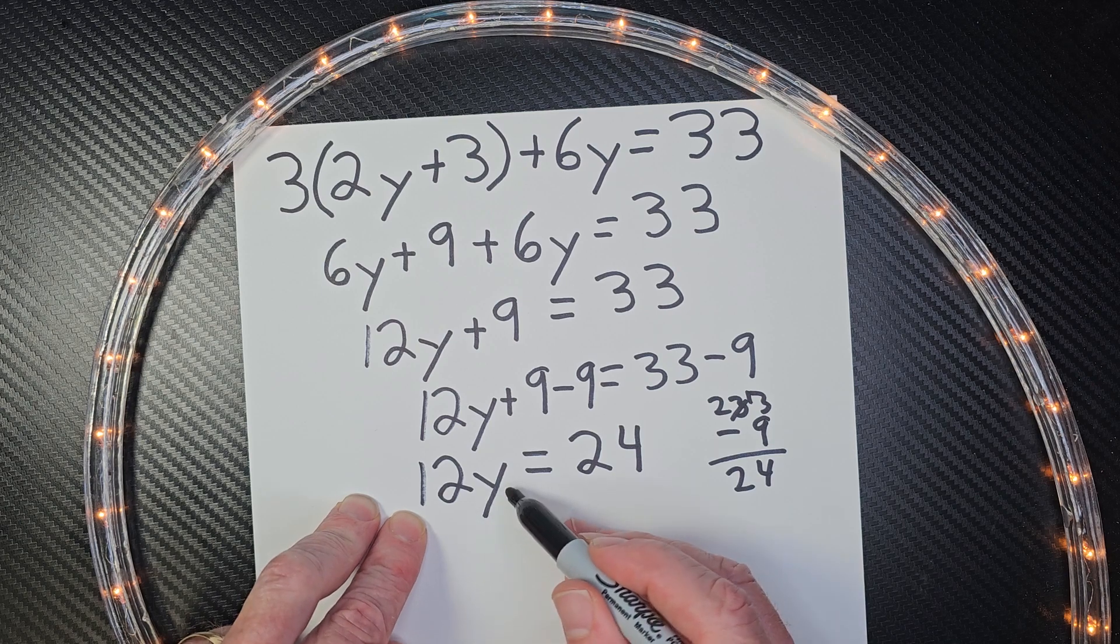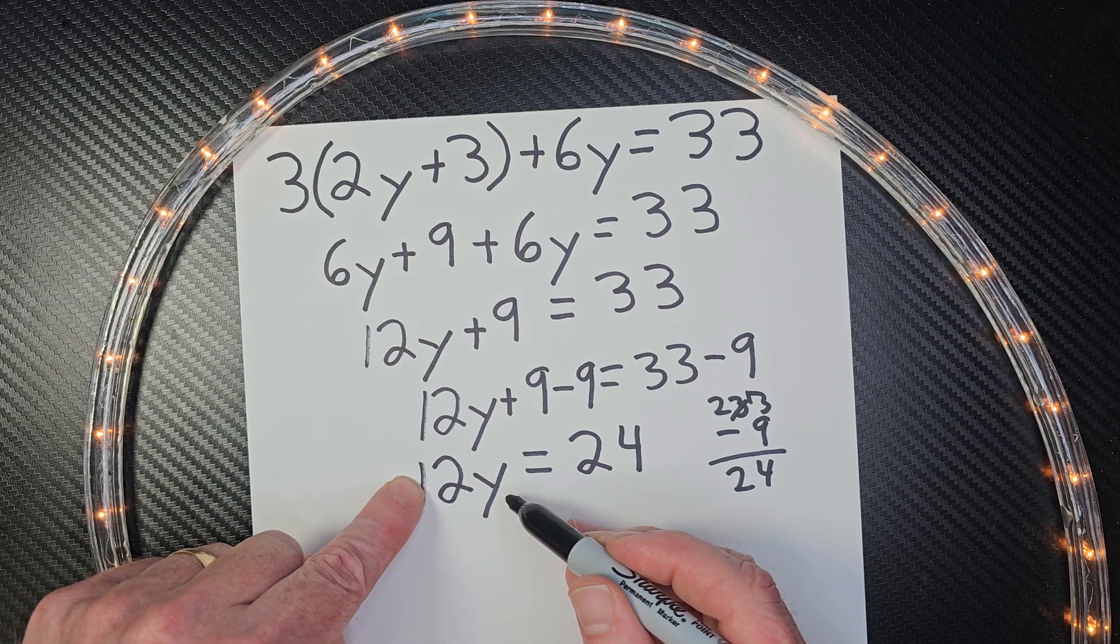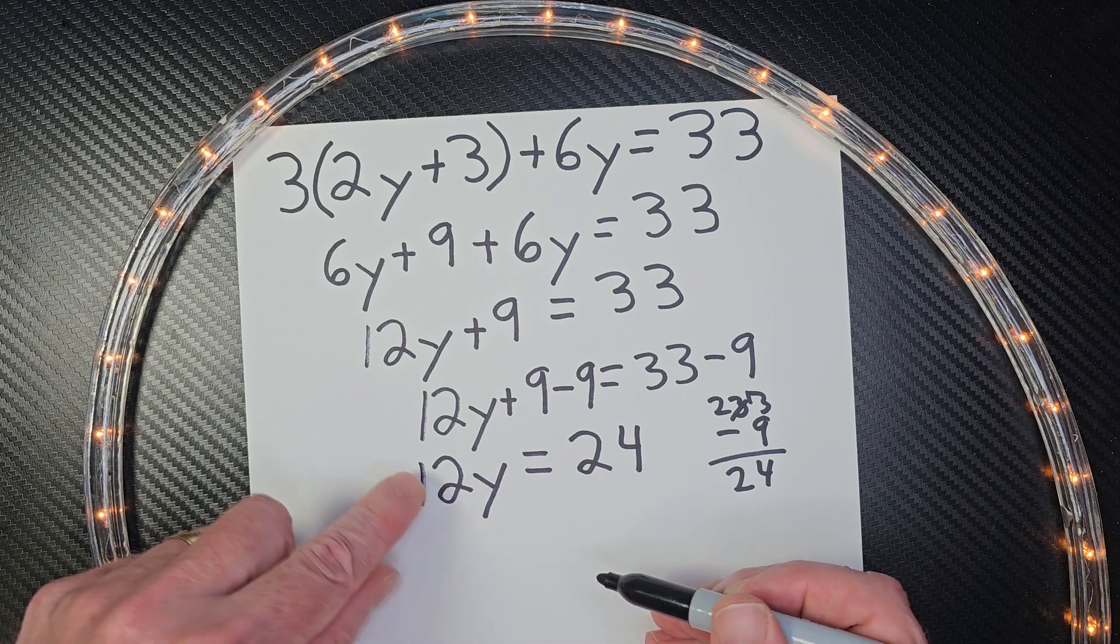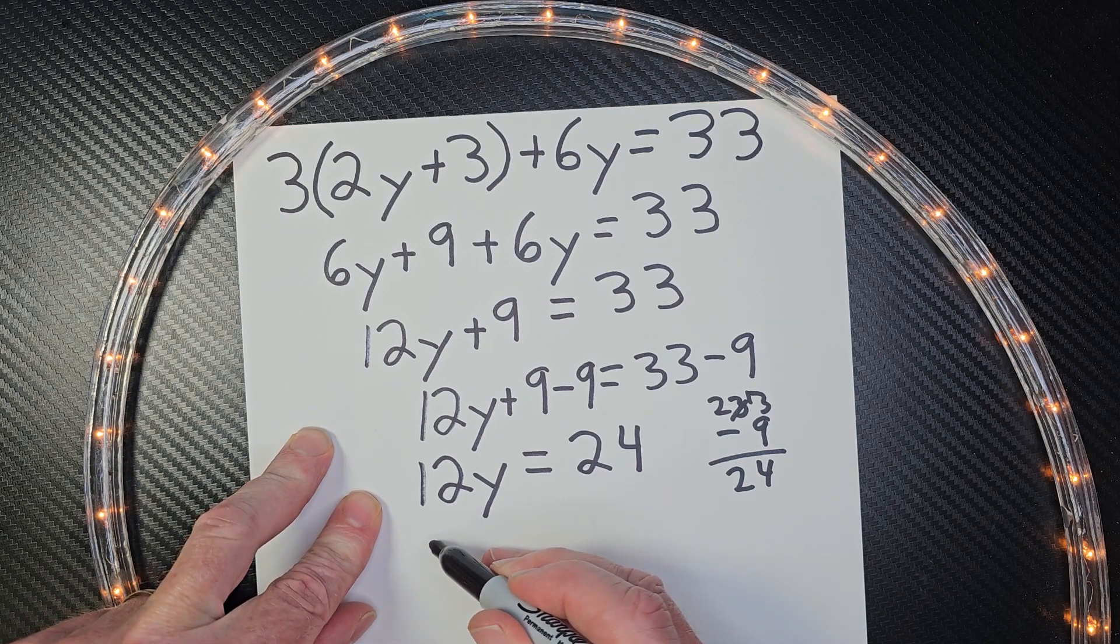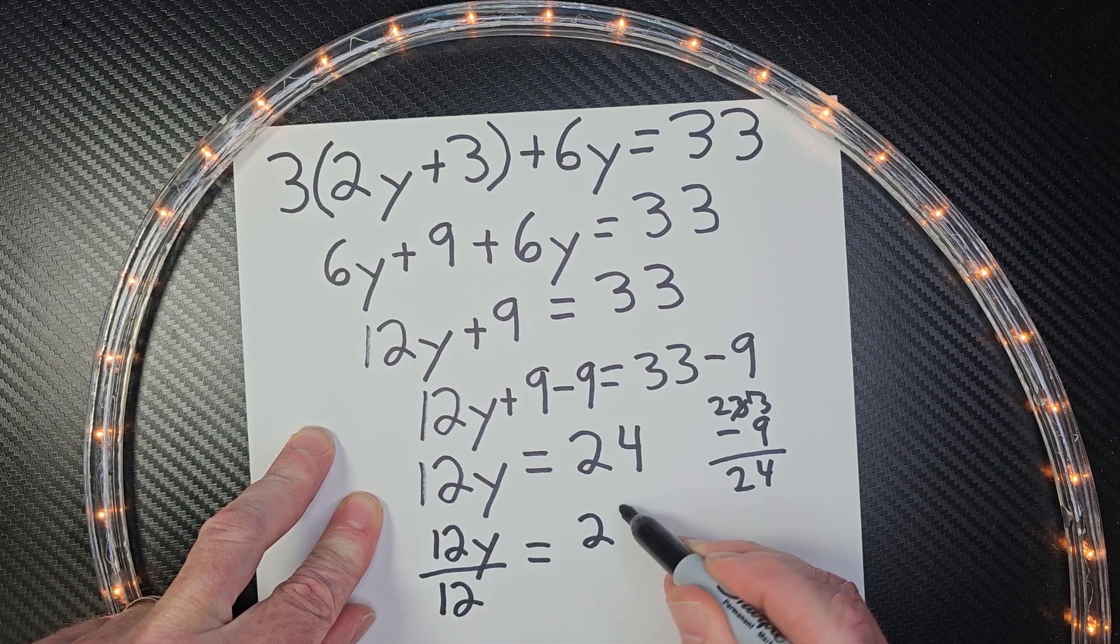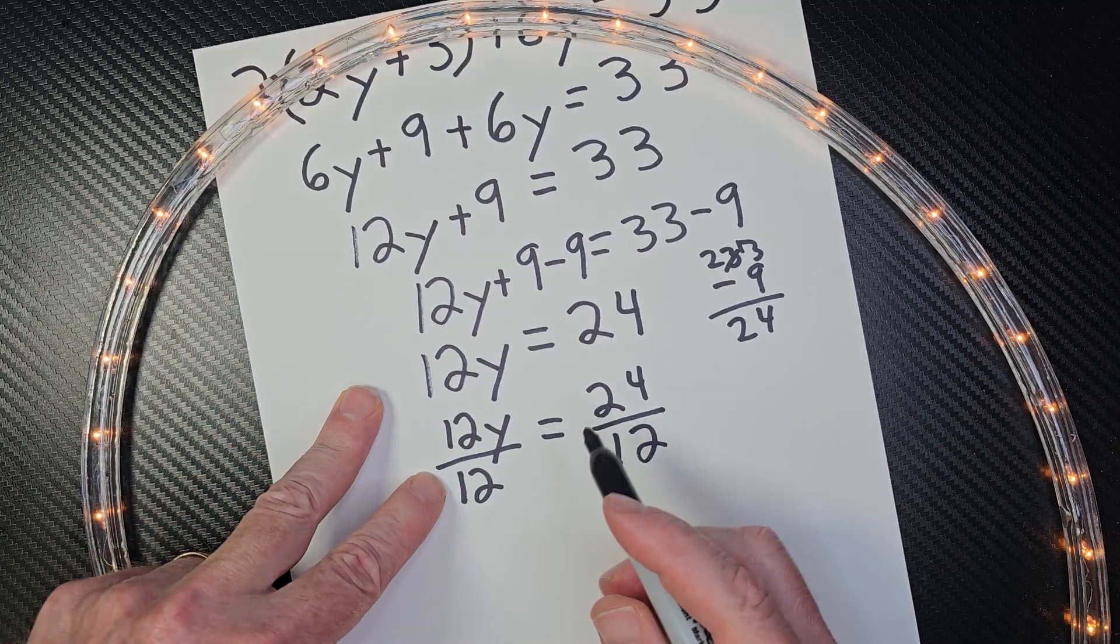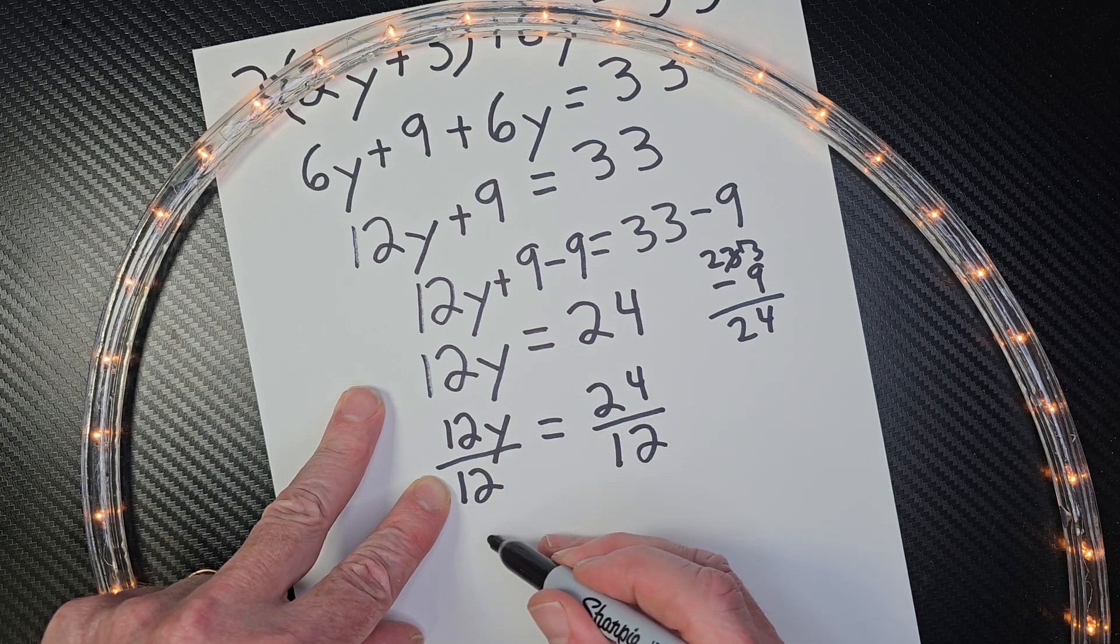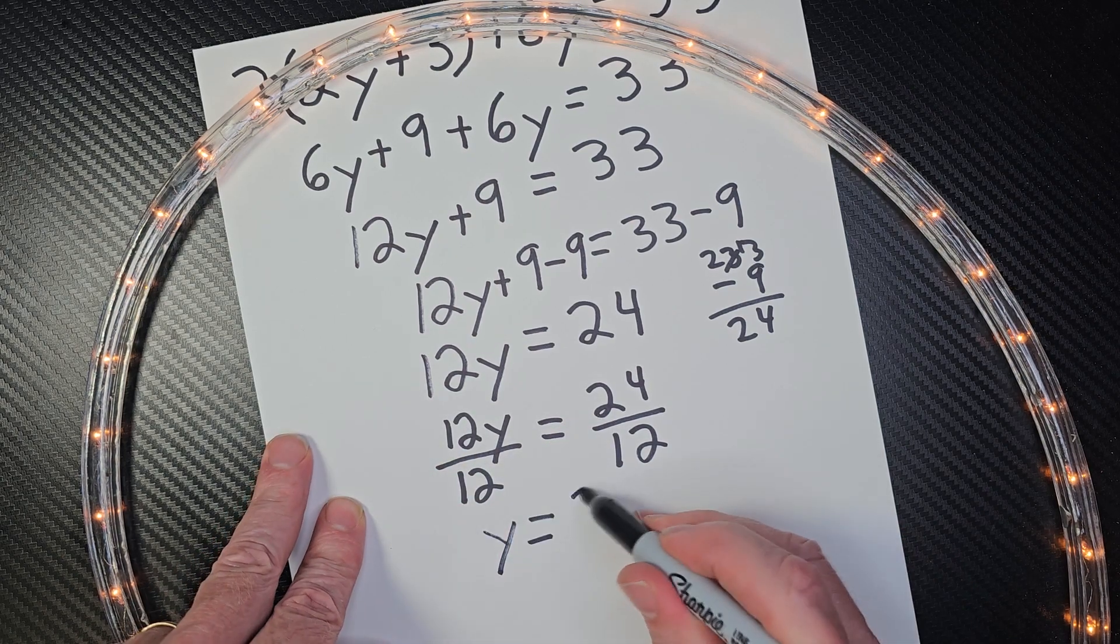So now I need to get Y alone, and I need to get rid of the 12. And what we are going to do is divide 12 by 12, and then 24 divided by 12. Remember, whatever we do here, we have to do the exact same on that side. So I'm going to go ahead and rewrite this: 12Y divided by 12 equals 24 divided by 12. 12 divided by 12 is 1, and I'm not going to put 1Y, I'm just going to leave it Y because it's 1Y. And then equals 24 divided by 12, 2.